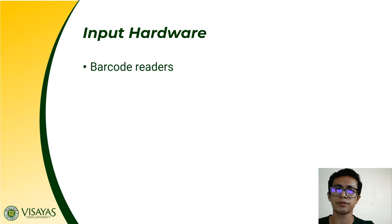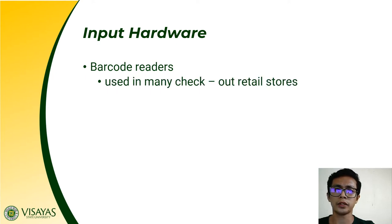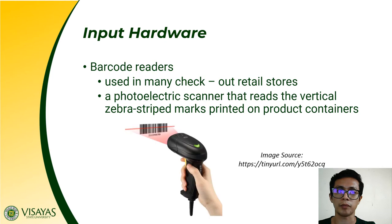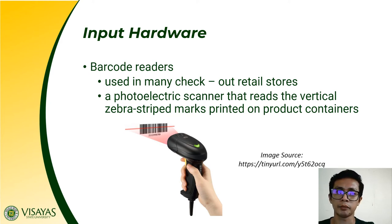Another input hardware is the barcode reader, mainly used in many checkout retail stores. A barcode reader is a photoelectric scanner that reads the vertical zebra stripe marks printed on product containers. Each line corresponds to a specific number, giving each item its identity. As you do checkout, it reads the barcode from the product and displays the price for easier checkout.